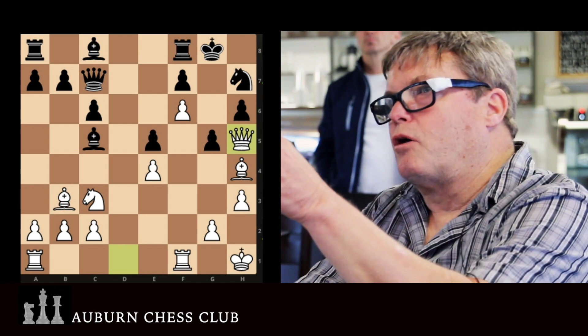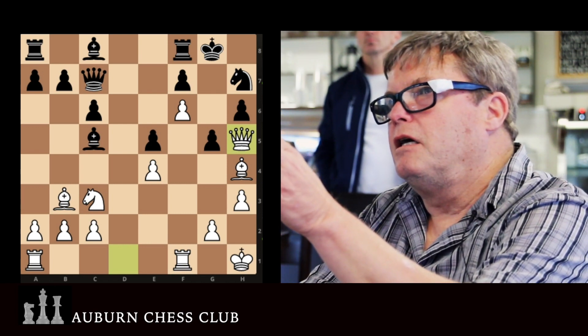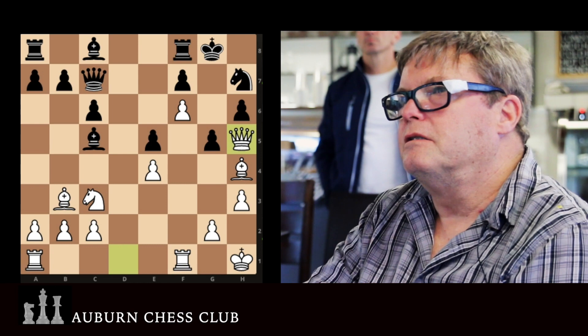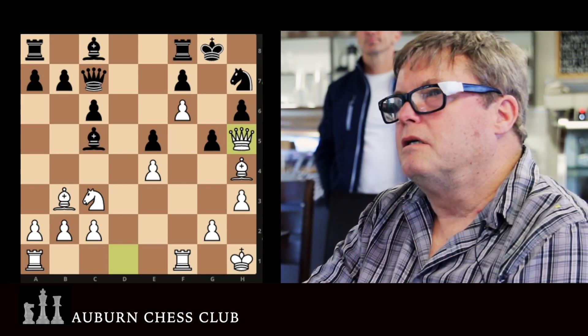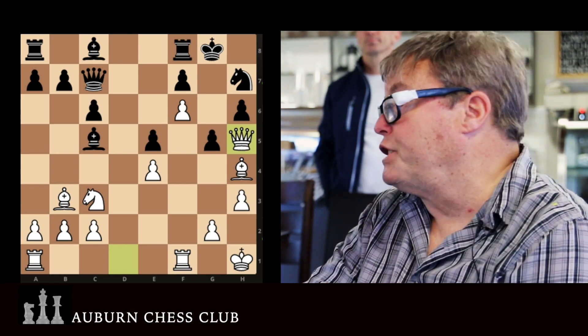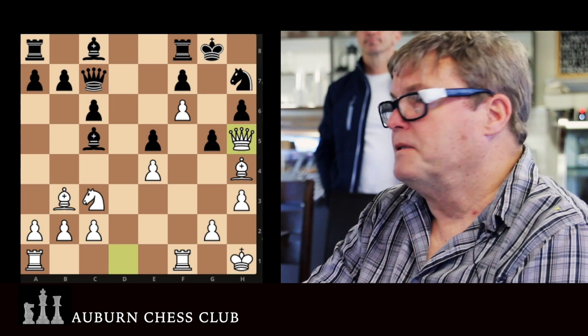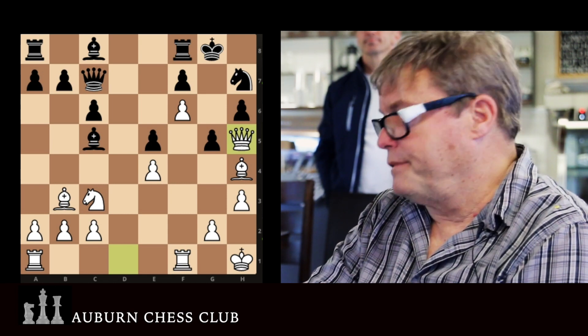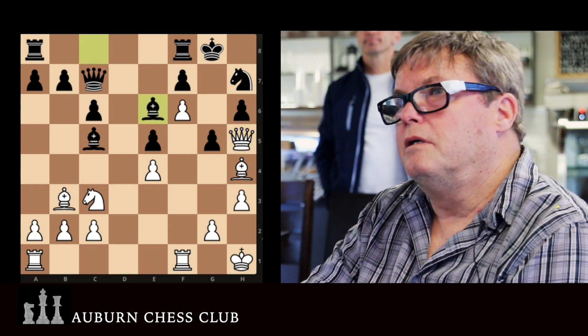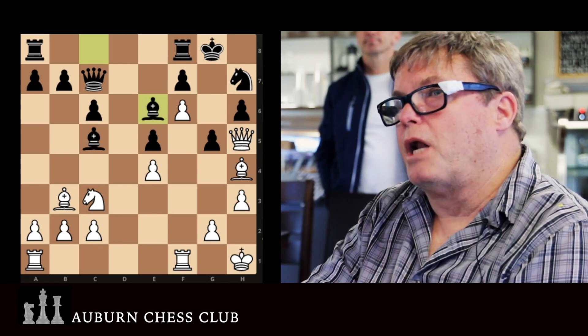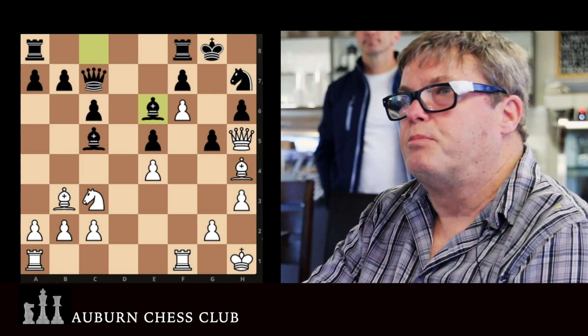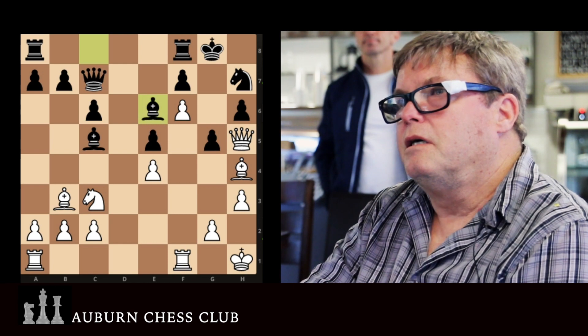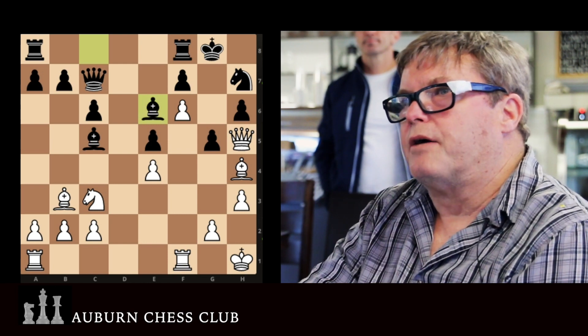And the threat, of course, is queen g6 because the pawn can't do anything. He's pinned. Queen g6 and it's queen g7. It's over. So what did he do? Okay, blocks the bishop. Actually, it wasn't the best move on his part. And my mistake comes down the line.